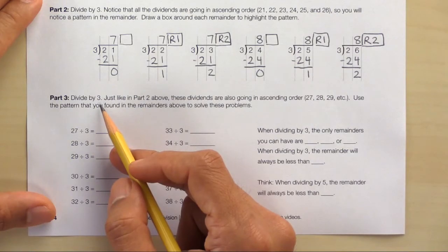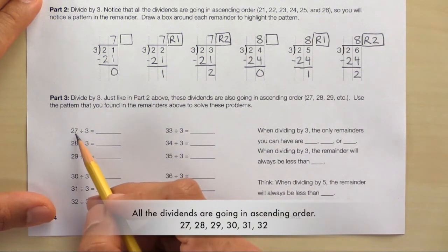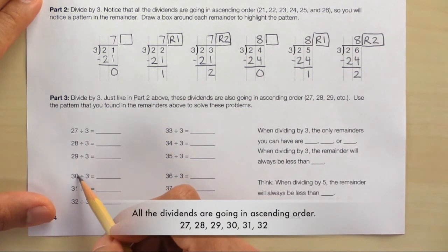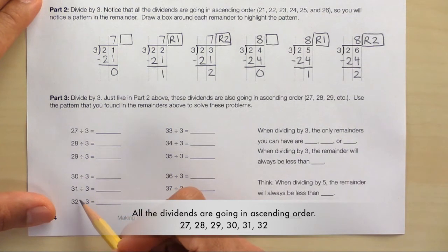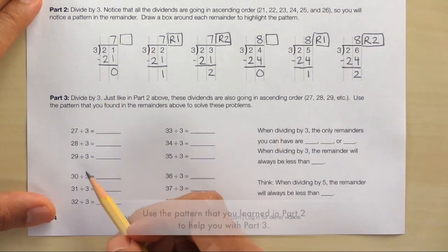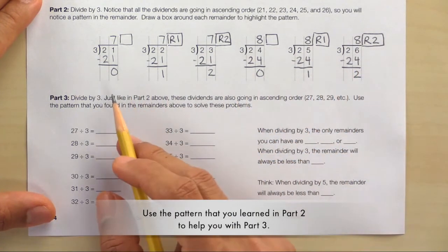Now let's use the pattern that we learned in part 2 to help us with part 3. In part 3, we're going to divide by 3. And just like in part 2 above, all the dividends are going in ascending order. So here we have 27, 28, 29, 30, 31, and 32. So let's use the pattern that we learned in part 2 to help us with part 3.